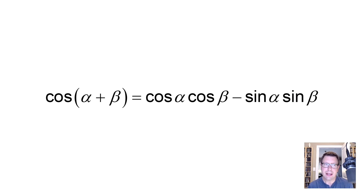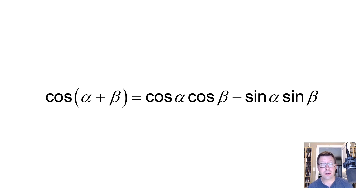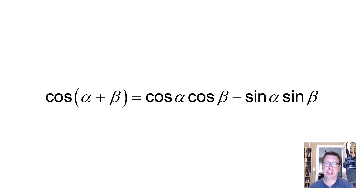To derive this formula we're going to use a geometric diagram, because after all isn't that what sine and cosine are all about? They are ratios of side lengths from right triangles. So we're going to use this diagram to help us derive this relationship.